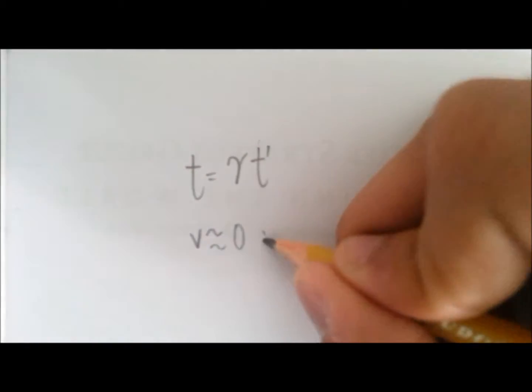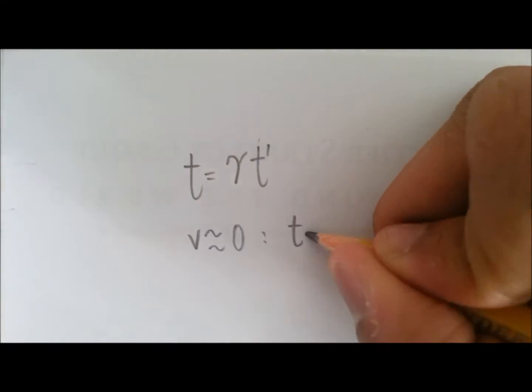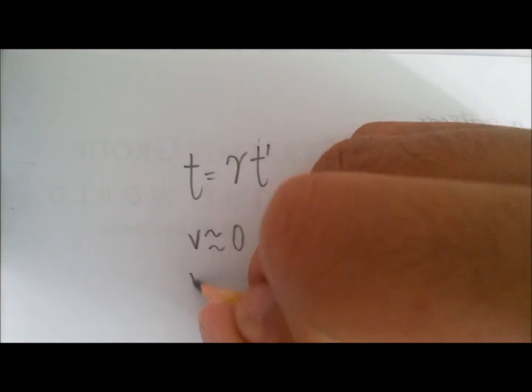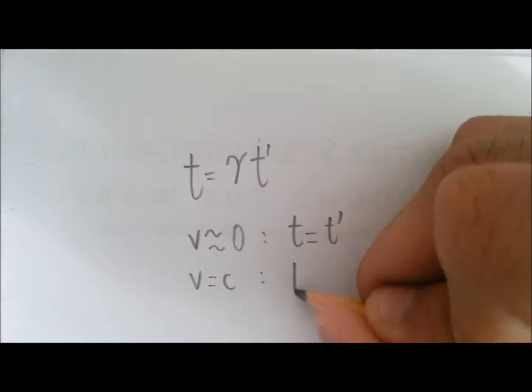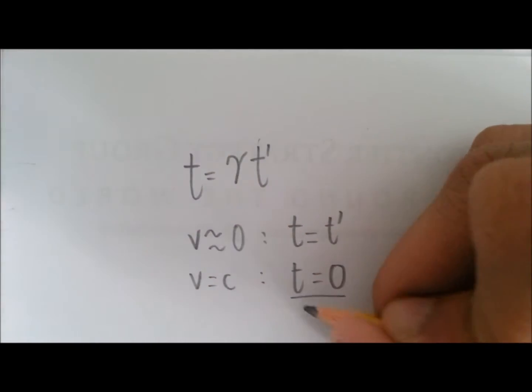One can see that for low values of v, the Lorentz factor is almost 1, so that time does not actually change too much, but at the speed of light, time freezes.